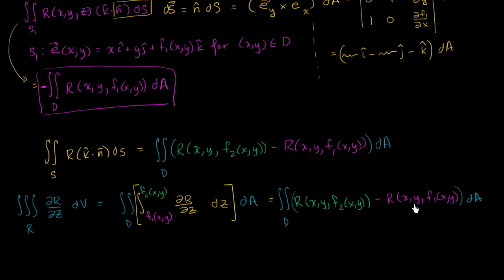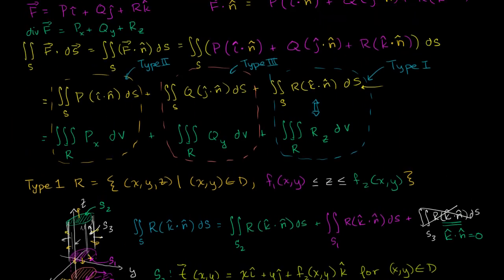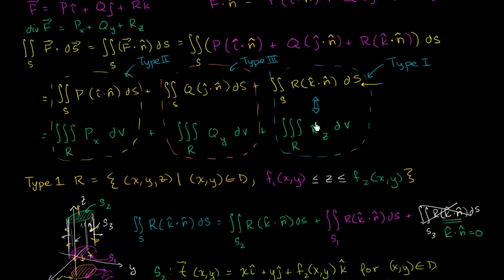Now, this is exactly what we saw in the last video, which shows that this is exactly this. So when we assumed it was a type 1 region, we got that this is exactly equal to this.